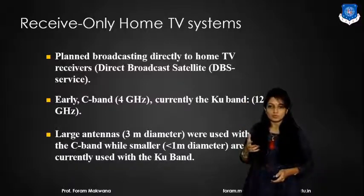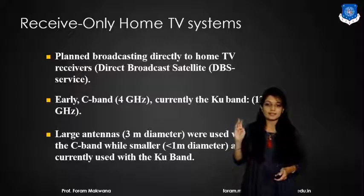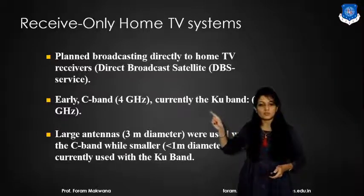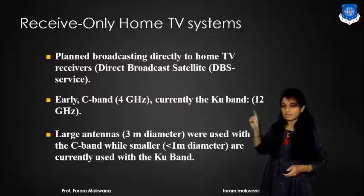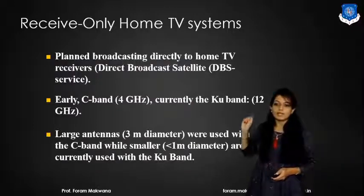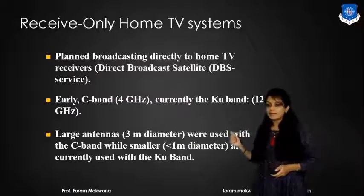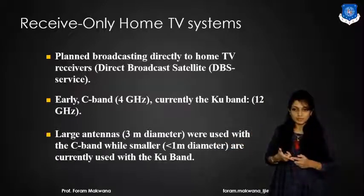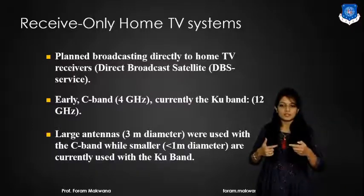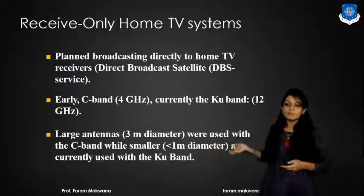On which frequency band are we going to operate? Earlier, the C band was used. The C band has a frequency range from 4 to 8 GHz. Currently, we have upgraded to the higher frequency band, that is the Ku band, having a frequency range of 12 to 18.5 GHz. As the frequency increases, we required a larger antenna with a diameter of 3 meters. But with C band, the frequency is smaller, so it requires a less than 1 meter diameter antenna.